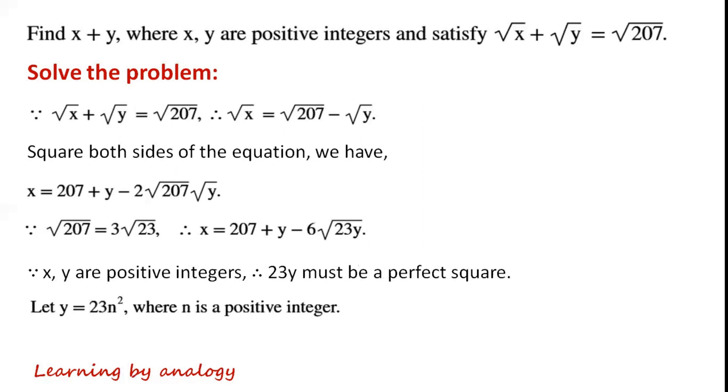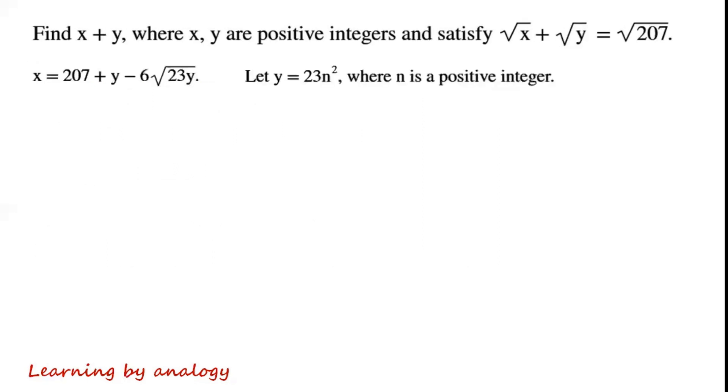Let y equal 23n², where n is a positive integer. Because y is less than 207, which equals 23 times 3², so n equals 1 or n equals 2.